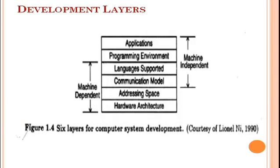Now, the development layers. The figure shows a layered development of parallel computers based on a classification from 1990. It shows six layers for computer system development — the upper layers are machine independent and the lower layers are machine dependent. Machine dependent means those layers depend on the machine architecture; machine independent means they are independent of computer architecture.